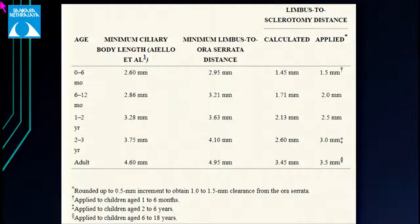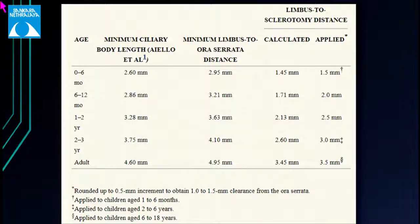This is the nomogram given by Lemley and Han, assuming normal ocular growth — it does not apply to ROP. In the age group of 1 to 6 months, it is safe to make sclerotomies at 1.5 mm posterior to the limbus; 6 to 12 months, 2 mm; 1 to 2 years, 2.5 mm; 2 to 3 years, 3 mm; and in adults, 3.5 mm in a phakic patient.